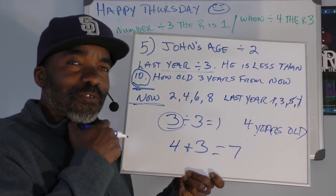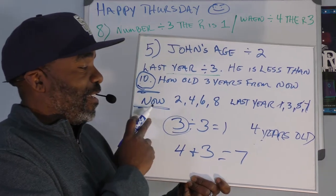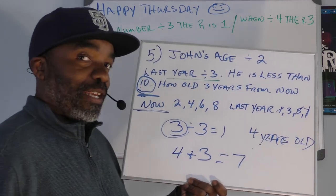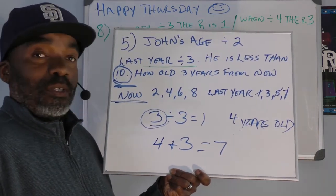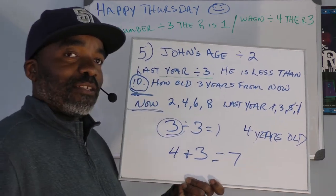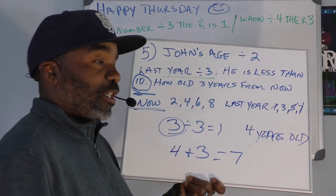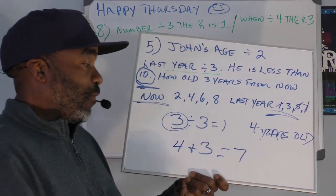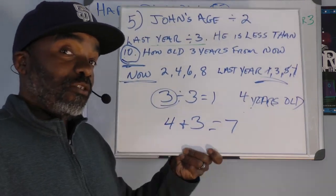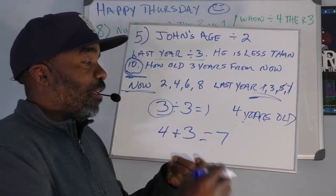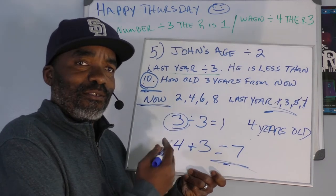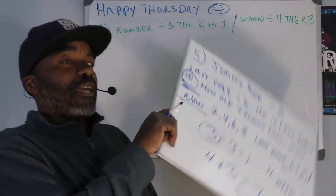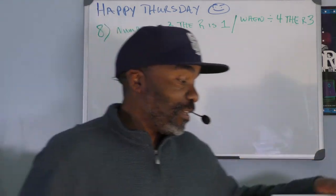JP — John Penguin — is currently four years old. The question asks how old he'll be three years from now: four plus three equals seven. JP will be seven years old. Make sure you answer the actual question — if you just found he's four years old now, you'd only get half credit. The answer is seven.